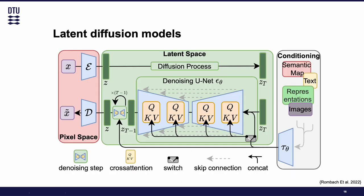Nevertheless, probabilistic diffusion models have a fundamental flaw: they operate in the pixel space, and this requires enormous computational resources. Thus, latent diffusion models originate, using latent space instead of pixel space in order to speed up the training and inference. So from a given image, we get the representation of that image in the latent space, apply the diffusion process, and then the denoising unit network can learn to undo the noise in the latent space thanks to some conditioning elements. Then when we have the result, we get it back to the pixel space.